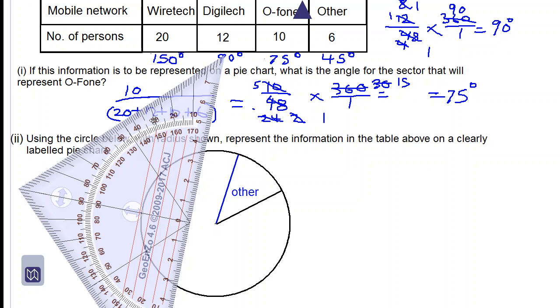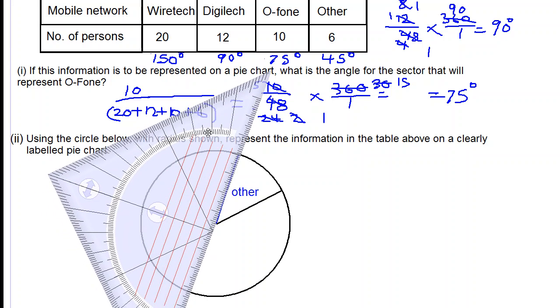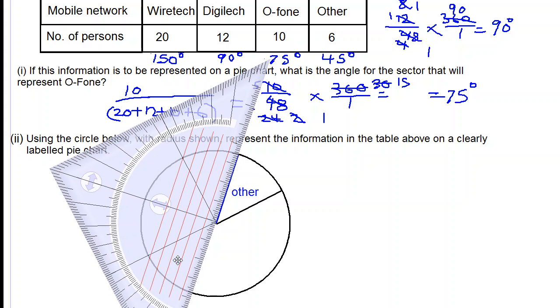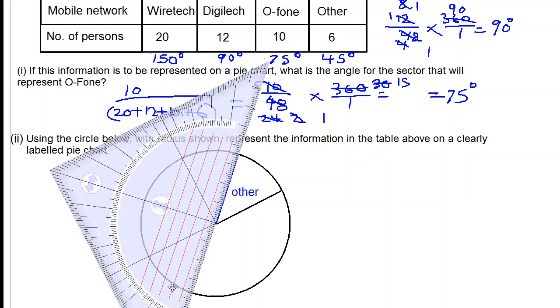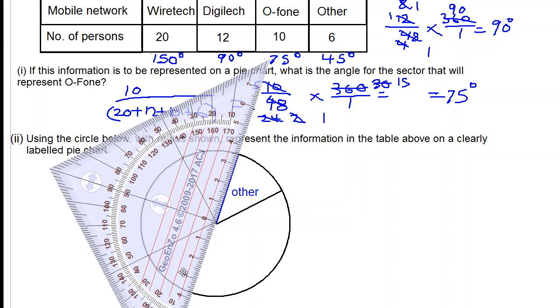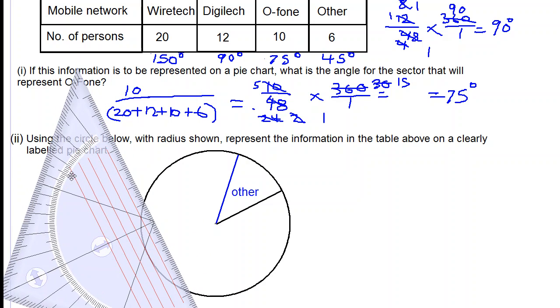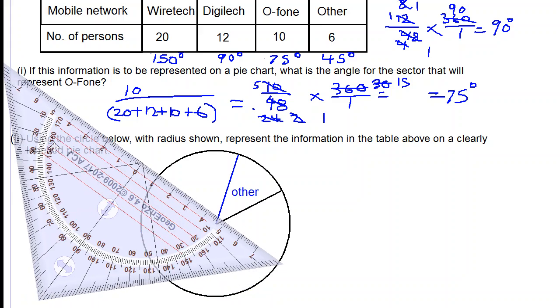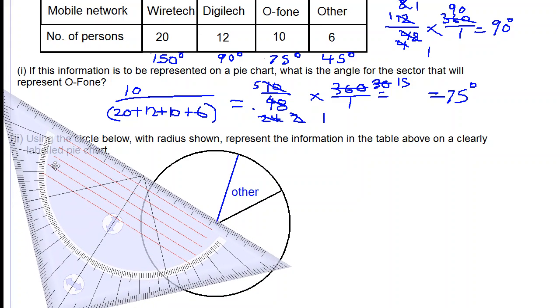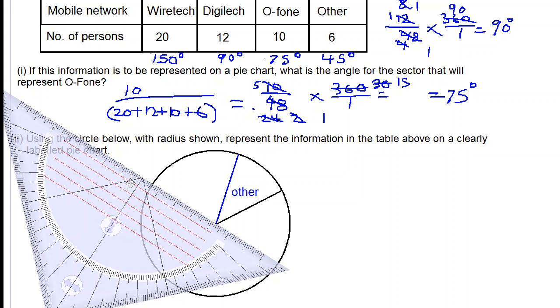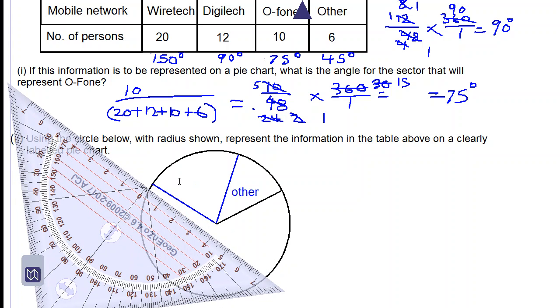And now we want to get the angle of 75 degrees. So we have 75 degrees to represent O-fone. So we have 70, 80, in between we have 75 degrees. Draw a line. So this will be O-fone.